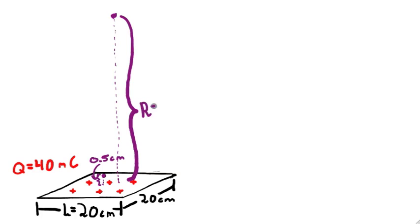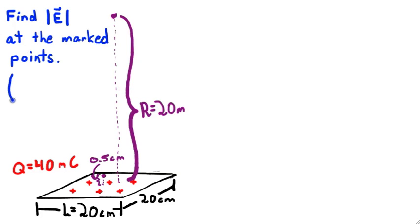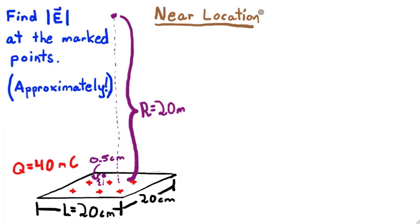The problem is to find the magnitude of the electric field at these two locations, one of which is close to the foil and the other far away. This sounds like a really hard problem, but we are only after an approximate answer. That means we're going to use some physical intuition to simplify our calculations. First consider the near location. This point is very close to the foil compared to the size of the foil itself.